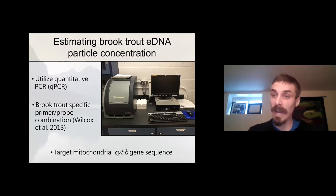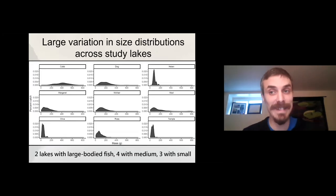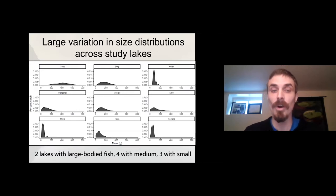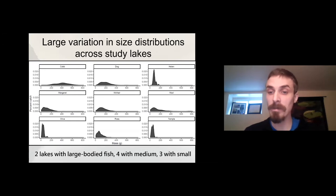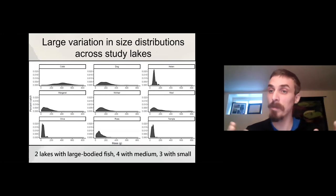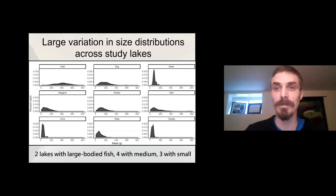The other handy thing about this study system is that there is indeed a large amount of body size variation amongst our study populations. We had two lakes with very large-bodied fish, four with medium-bodied fish, and three with small-bodied fish. So it was a good gradient of both population abundance and organism body size.